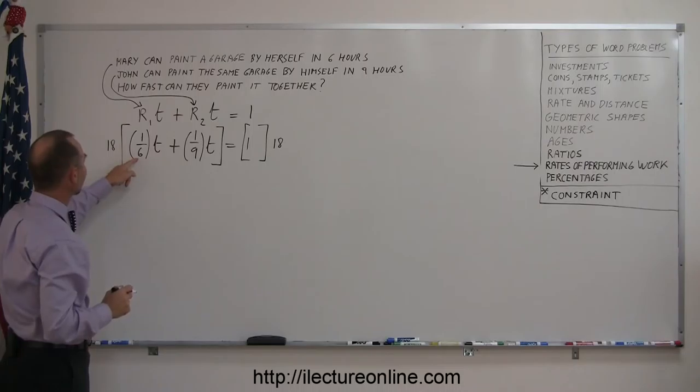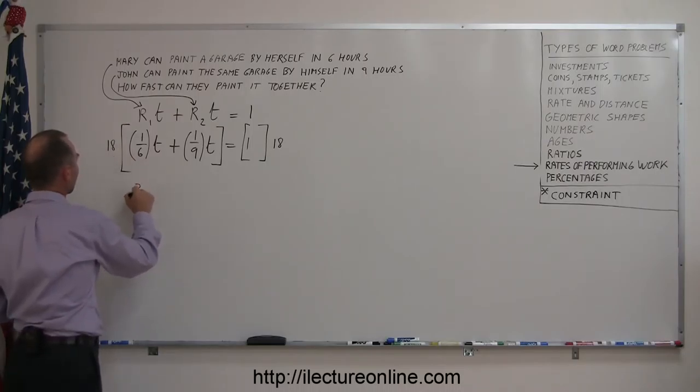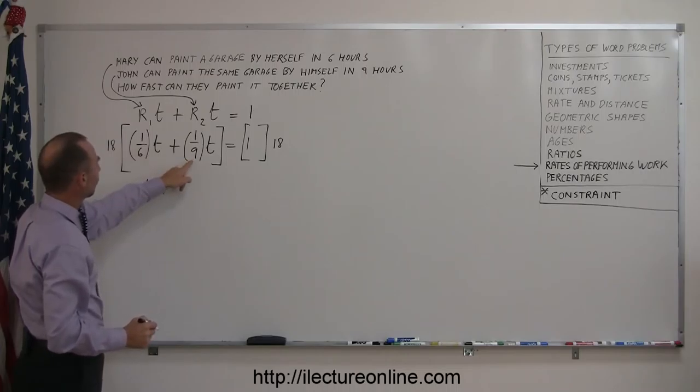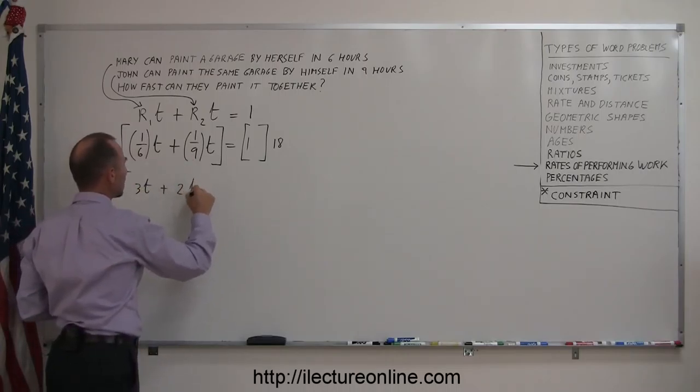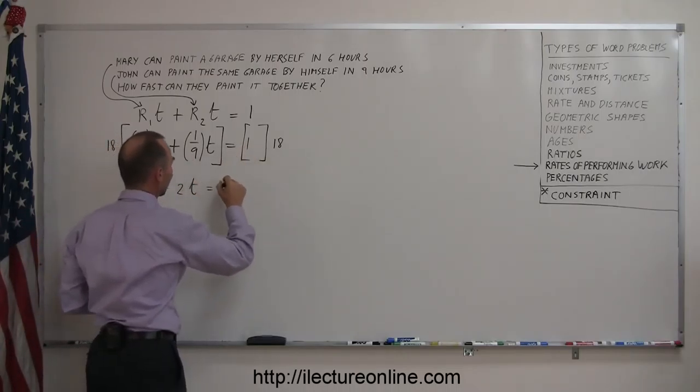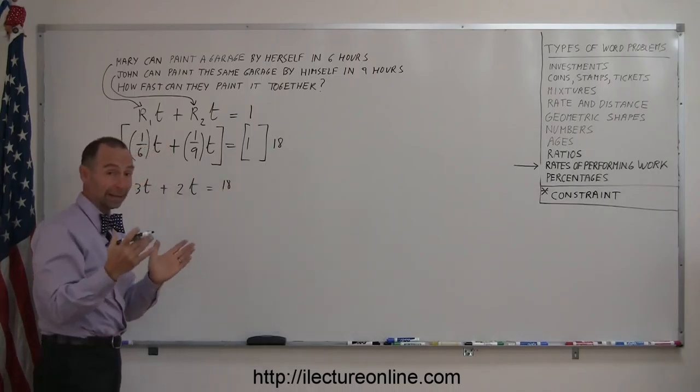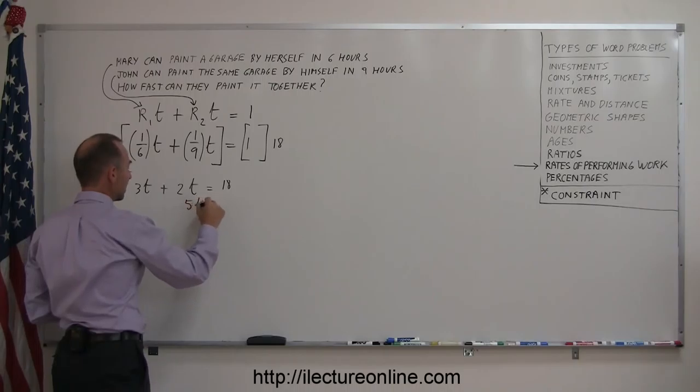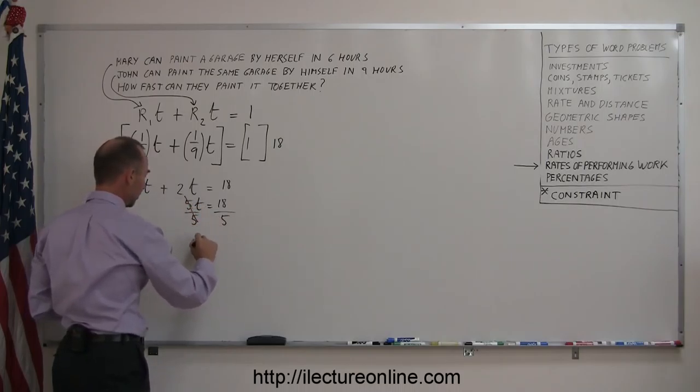Now, eighteen divided by six is three, so that gives me three t, plus eighteen divided by nine is two, that gives me plus two t equals eighteen. Now we combine the like terms, three t plus two t, that's five t equals eighteen. Now we divide both sides by the numerical coefficient in front of the variable t, that cancels out, we have t equals eighteen over five.